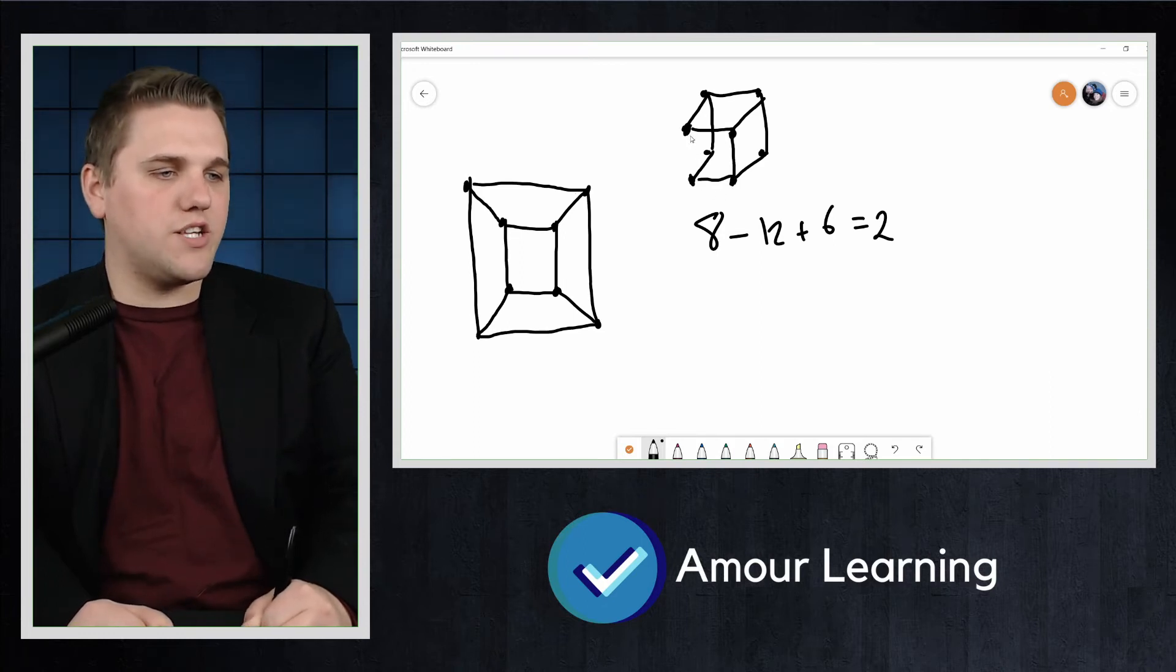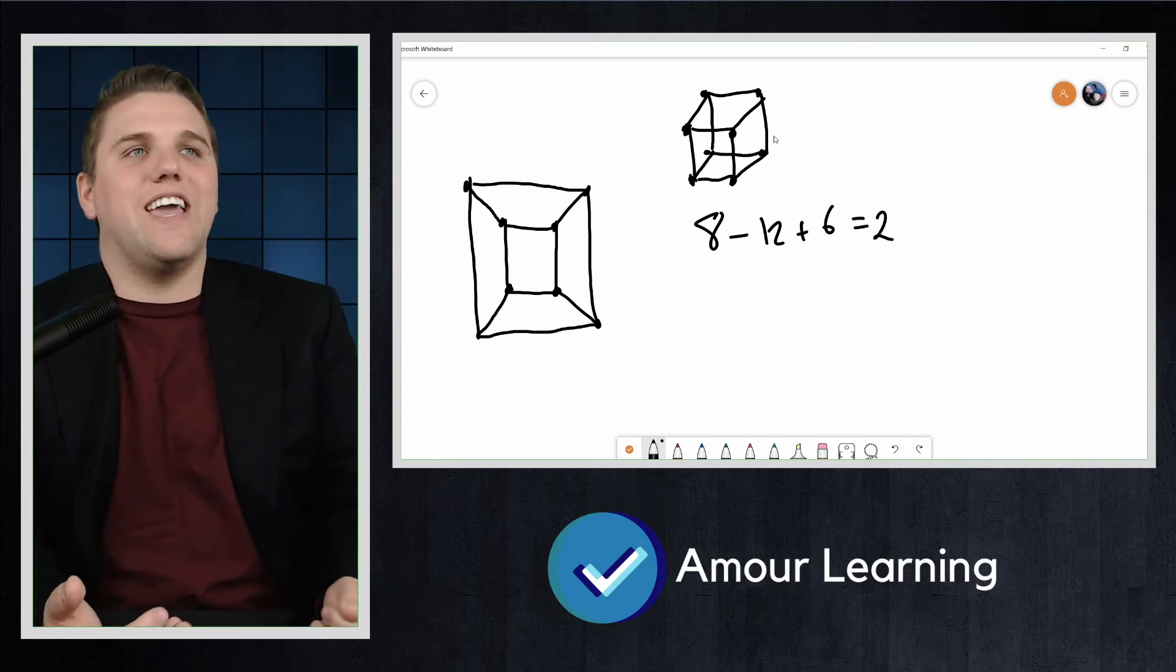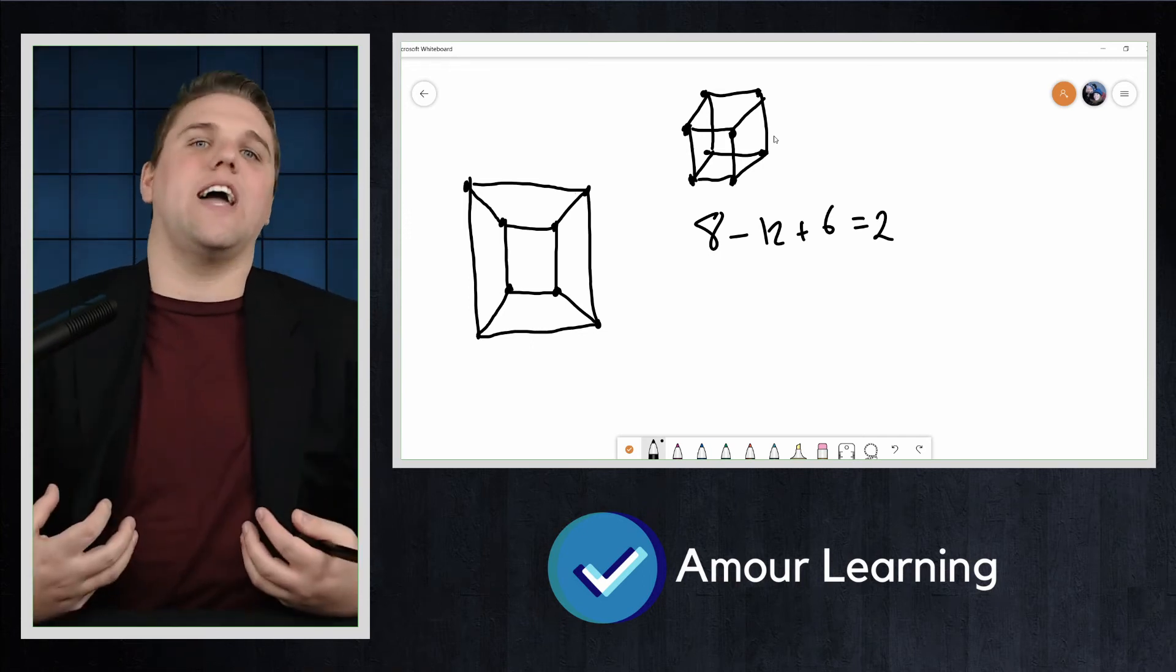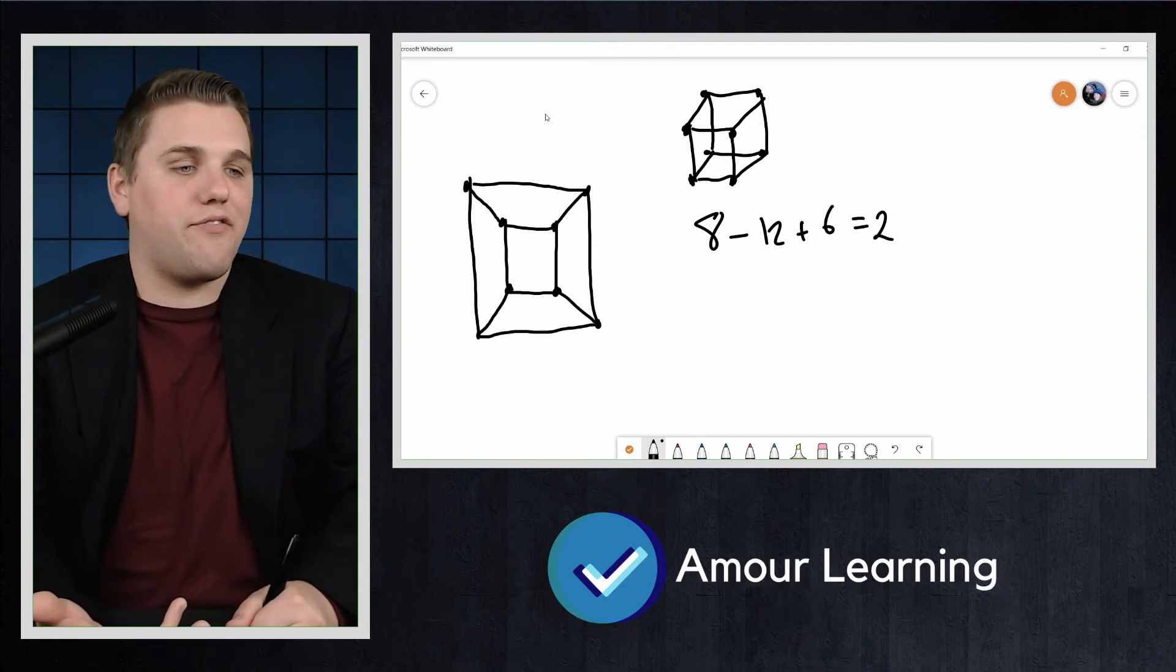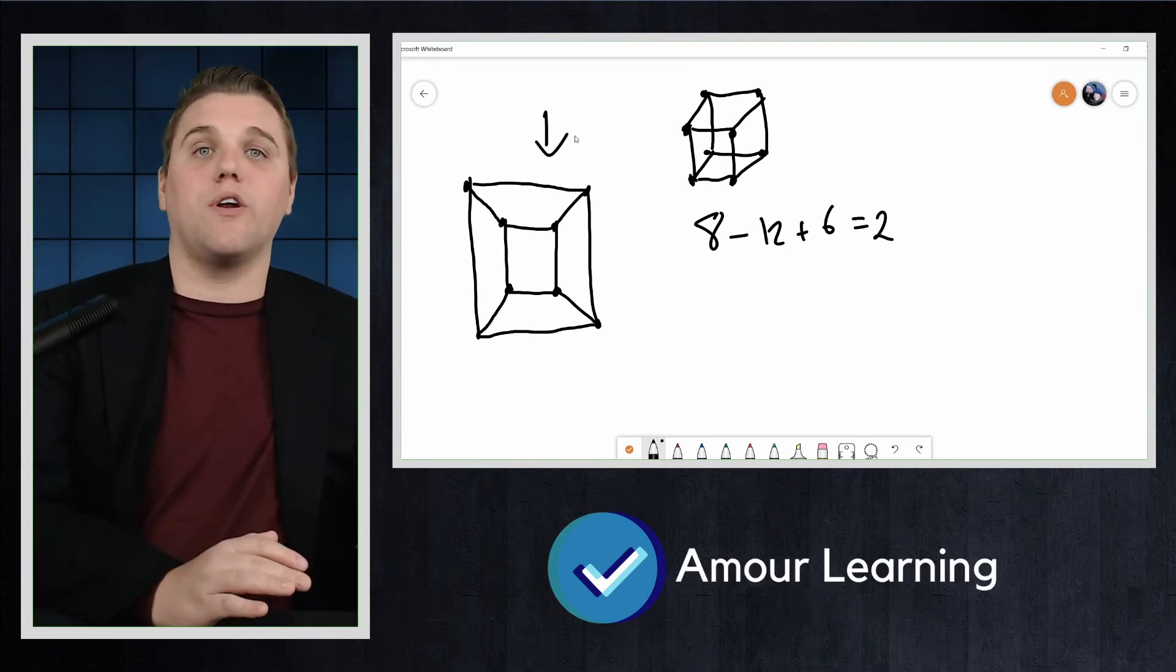But one problem with this projection here is we have edges crossing. We can draw this diagram by stretching things around, and it's the same graph, but we can make it planar, and that's really important.